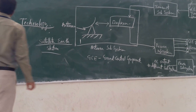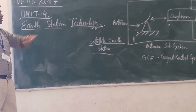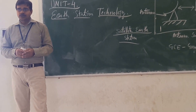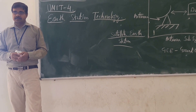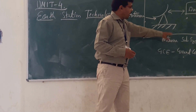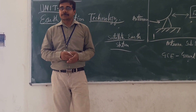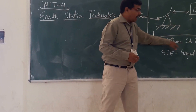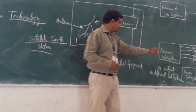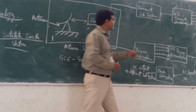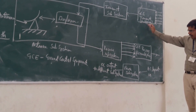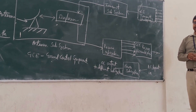If you are going for this Earth Station technology, there are different subsystems and different blocks at the Earth Station. You are having 5 different subsystems: the antenna subsystem, the transmit subsystem, the receive subsystem, the GCE subsystem, and finally the power subsystem. GCE stands for ground control equipment.